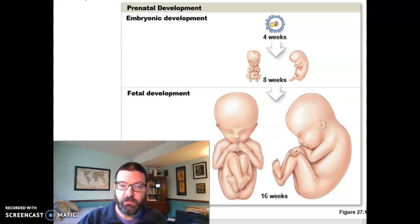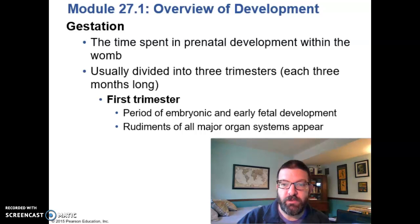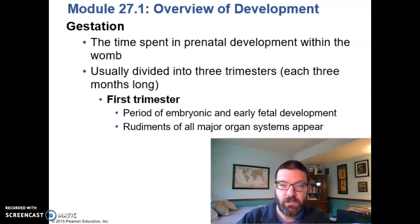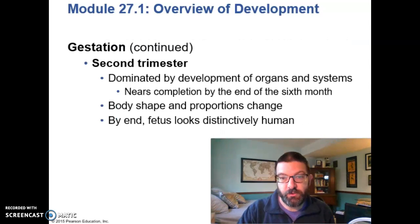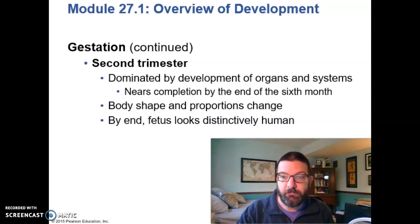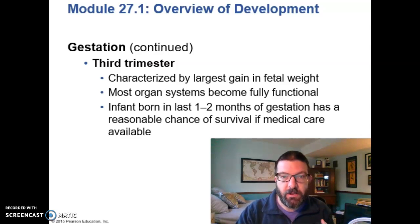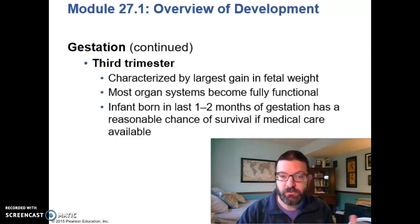They will develop over the course of fetal development into functional body systems that can take care of you once you're born. You can also divide this into three trimesters of gestation, which is almost more from the mother's perspective. The first trimester includes all of embryonic development and the very first part of fetal development — that's where you get the rudiments of all those major body systems; they're not functional, but they become present. In the second trimester, you're developing all those organs and organ systems, and by the end of the sixth month you look distinctly human, pretty baby-like, just small, and many of your systems are functional. The third trimester is when you're bringing those last body systems online and getting bigger, gaining weight, to the point where in the last month or two, if the baby is born prematurely, they have a pretty good chance of survival as long as there's proper medical care available.